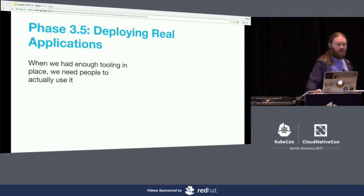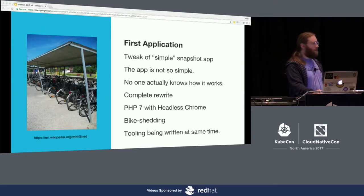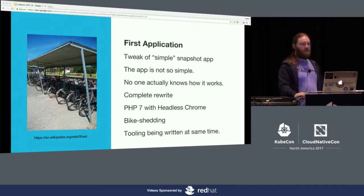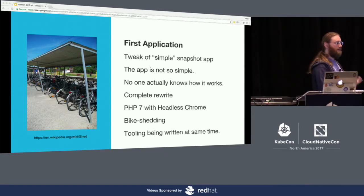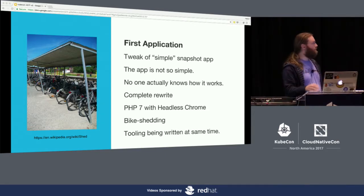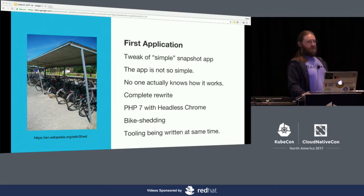I call this phase 3.5 because a lot of this was all happening at the same time. It's not great to just show toy applications, so the first application we chose was a simple one that takes snapshots of web pages for people. It turned out that application was not so simple — it became a complete rewrite, we were developing tools at the same time, it turned into a giant bikeshed, and we still have not finished it.